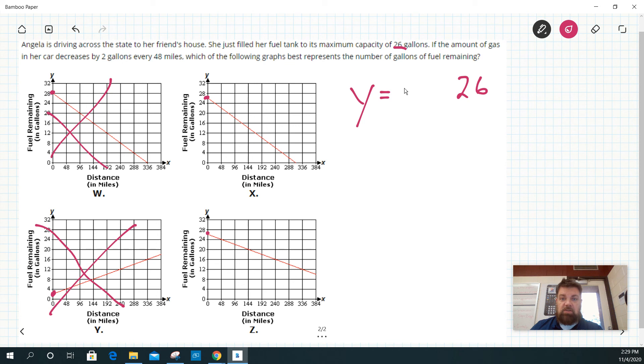And then we decrease 2 gallons for 48 miles, so it's minus 2 over 48x. Now truthfully, I could reduce that fraction by dividing the top and bottom by 2, so I'm going to go down 1 over 24x. And then this is our equation.